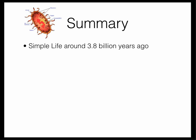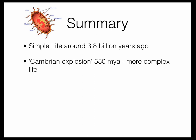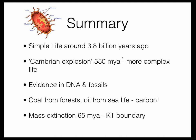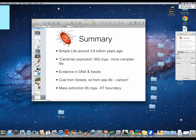Quick summary: simple life evolved around 3.8 billion years ago. The Cambrian Explosion, about 550 million years ago, is when more complex life made of many cells formed. There's evidence for both of those in DNA and in fossils. Coal is from ancient forests hundreds of millions of years ago, and oil comes from ancient sea life — and by burning them, we're releasing carbon from those ancient plants and animals back into the atmosphere. There was a mass extinction about 65 million years ago, and there's evidence in the KT boundary that it could have come from an asteroid.